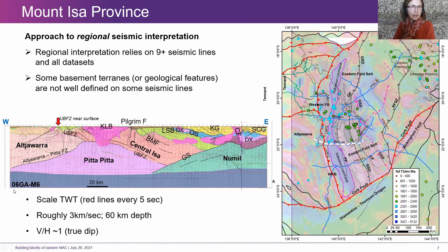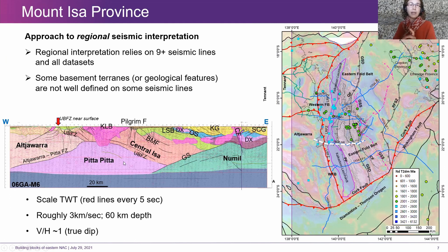On all the lines you can see these red lines — they're every five seconds, so that's the full 20-second image, roughly equivalent to 60 kilometers. The first red line is going to be at about 15 kilometers or a bit less. Most of the images are at roughly vertical equals horizontal scale, so you'll always see that 20-kilometer scale bar — you're largely seeing true dips.